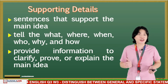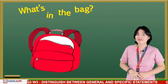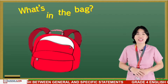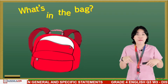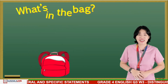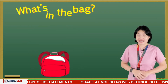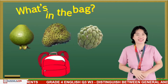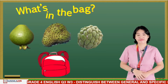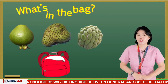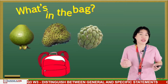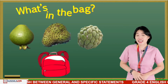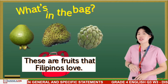Let's discuss further through an activity called 'What's in the Bag?' I'll be pulling some items from the bag, and kindly tell me through comments the main idea. What's in the bag? Guava, guayabano, atis — what are they? Yes, they are fruits. Guess what the main idea is. More likely: these are fruits that Filipinos love.